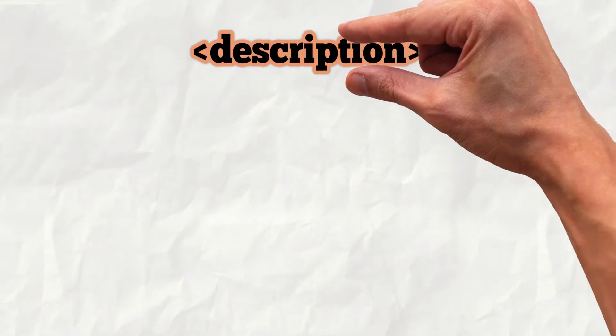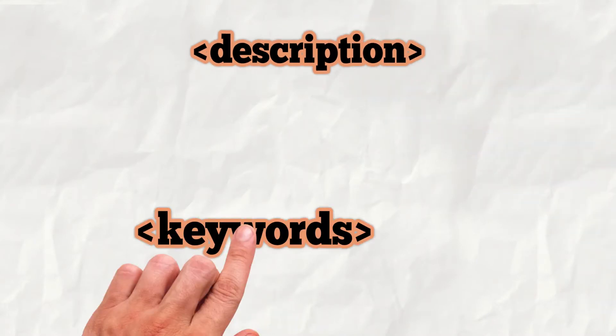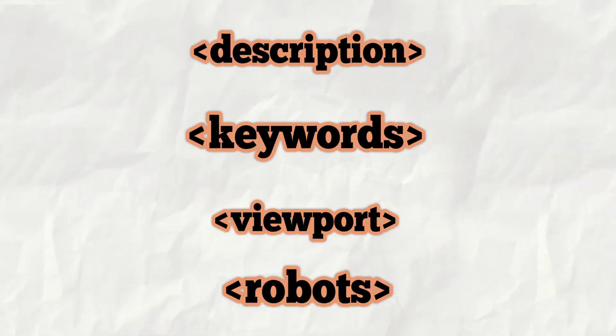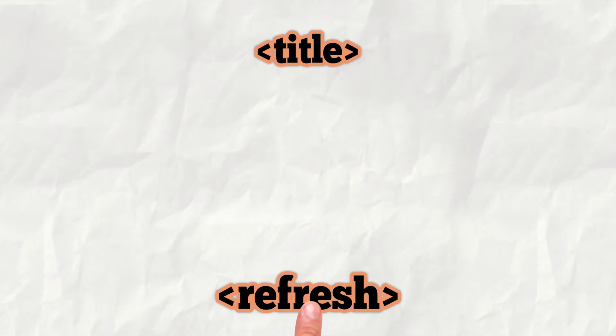There are hundreds of metatags available for us to work with in HTML. In this video, we're going to talk about the six most important metatags. They are: description, keyword, viewport, robots, title, and refresh.